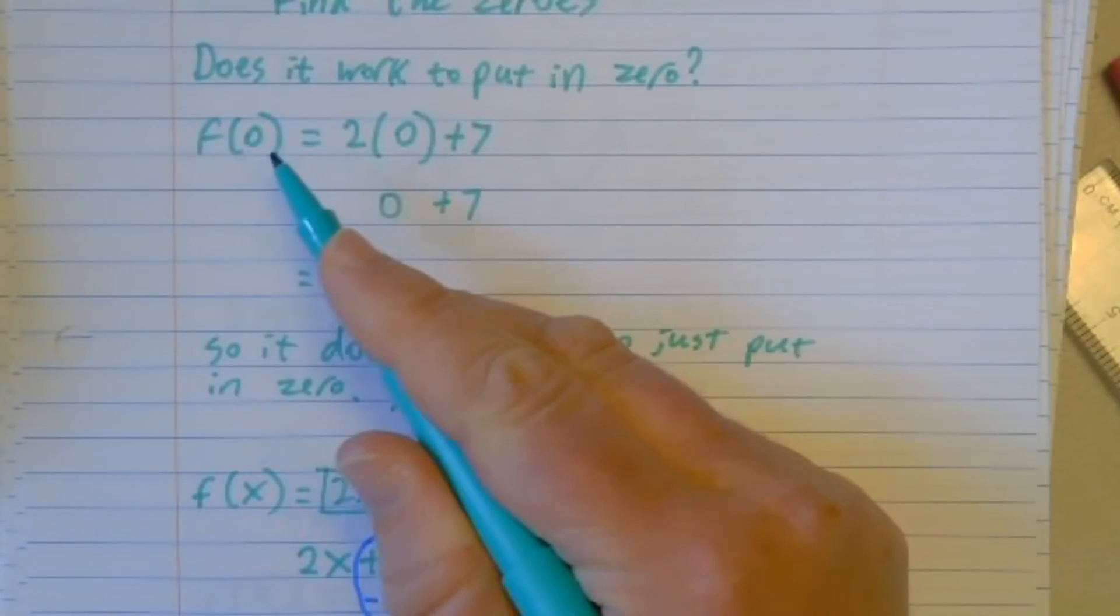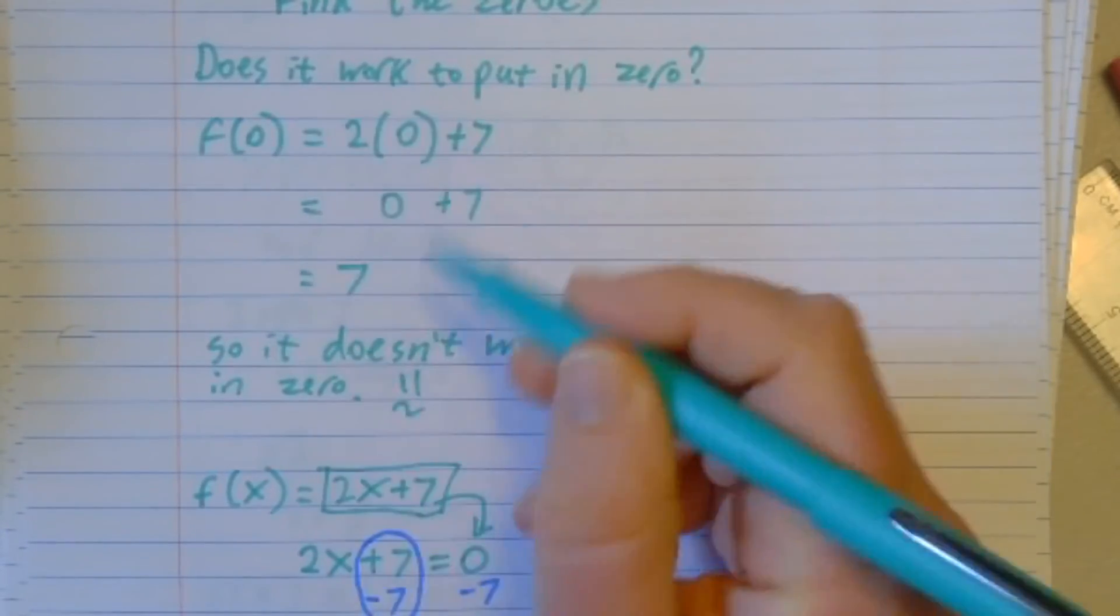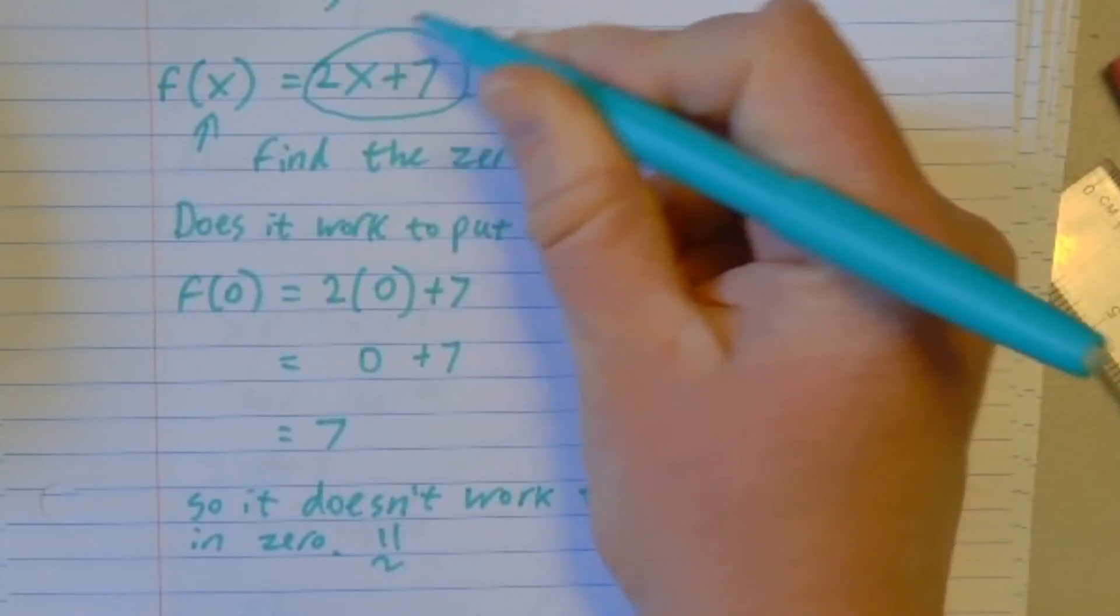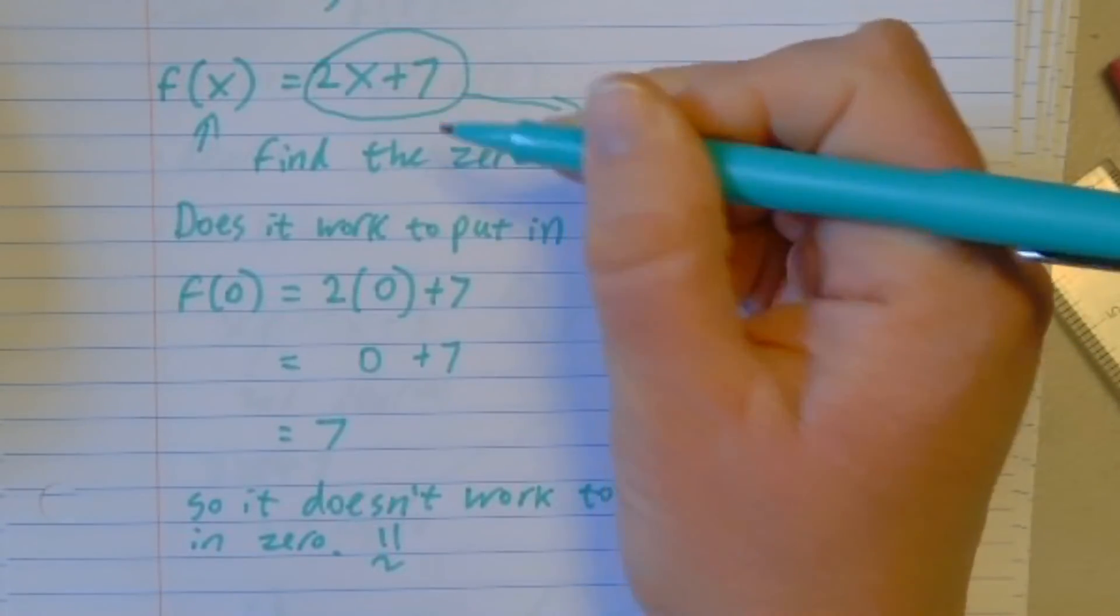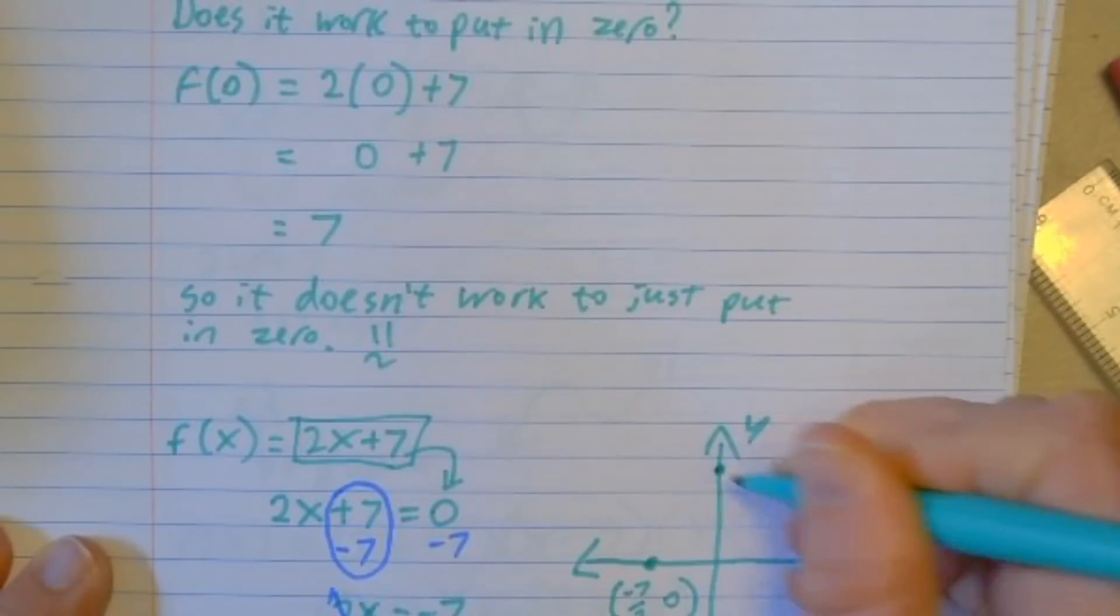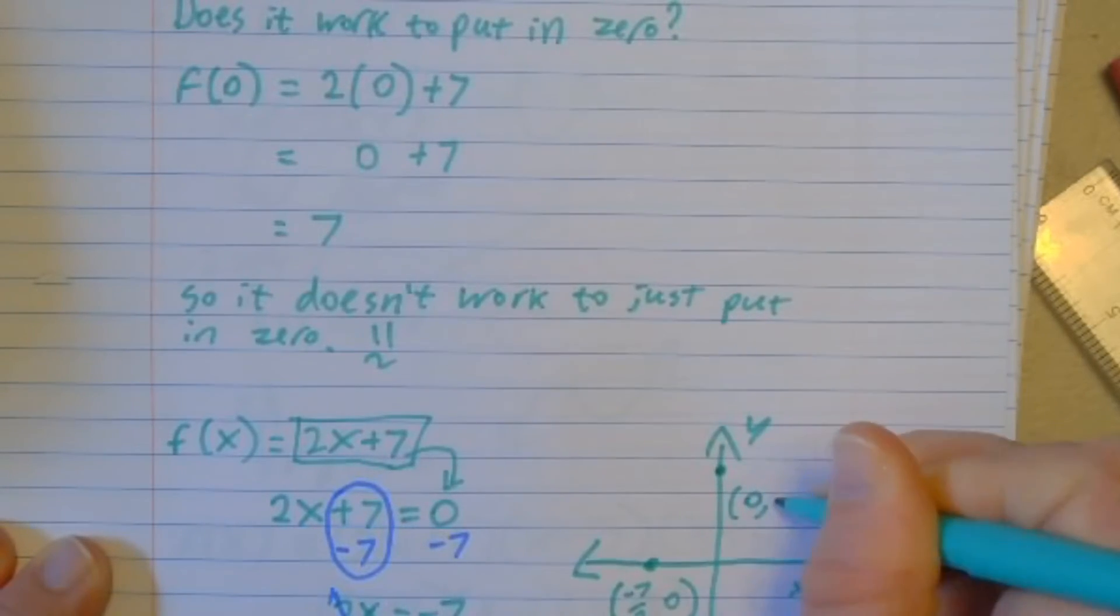And that point would be on my graph. And I happen to know the y-intercept as well, because I found that up here, by finding out what my output is when my input is 0. And also because this is in slope-intercept form, and the intercept would be 7. So up here at the point 0 comma 7, I put in 0, I get out 7.